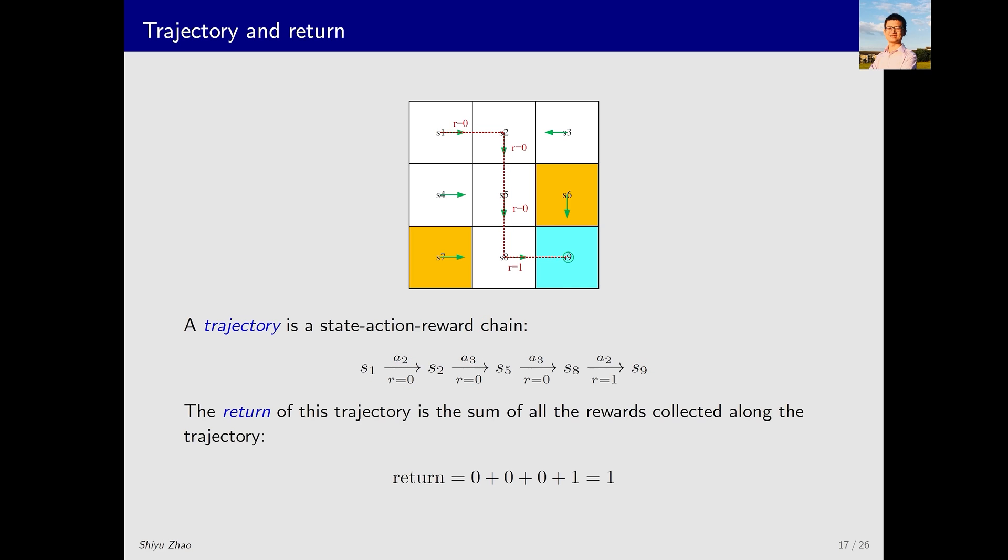Another extremely important concept is return. Return is related to trajectory. What is the return of a trajectory? It is the sum of all rewards obtained along that trajectory. For instance, in this case, the rewards are 0, 0, 0 until reaching the target, where it becomes 1. Summing these rewards, the total return is 1, which is the total sum of rewards along the trajectory.